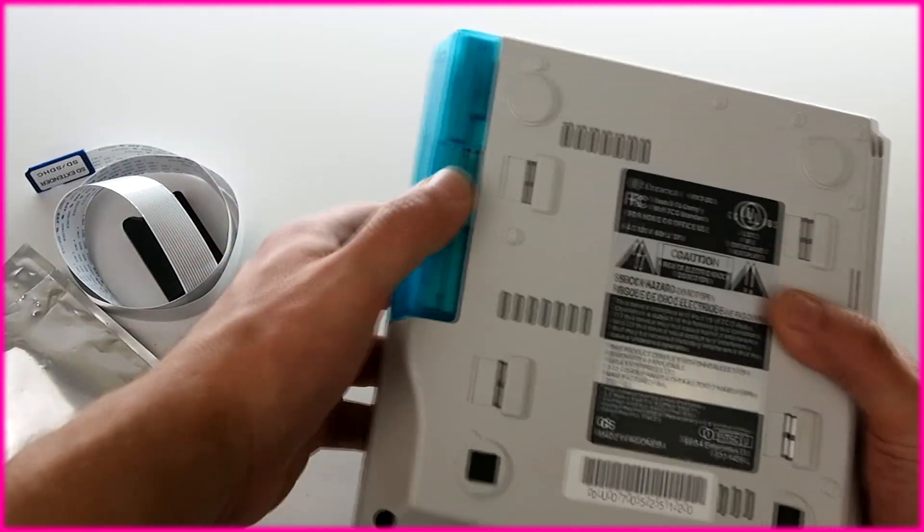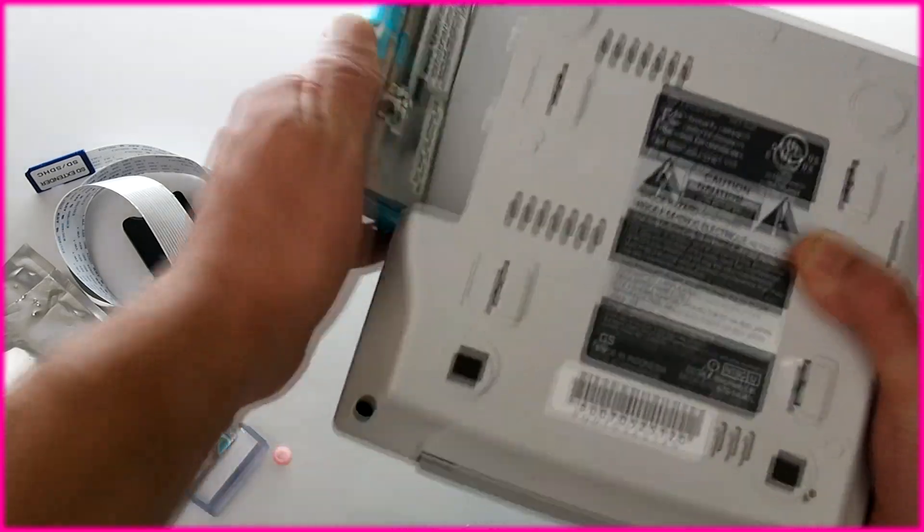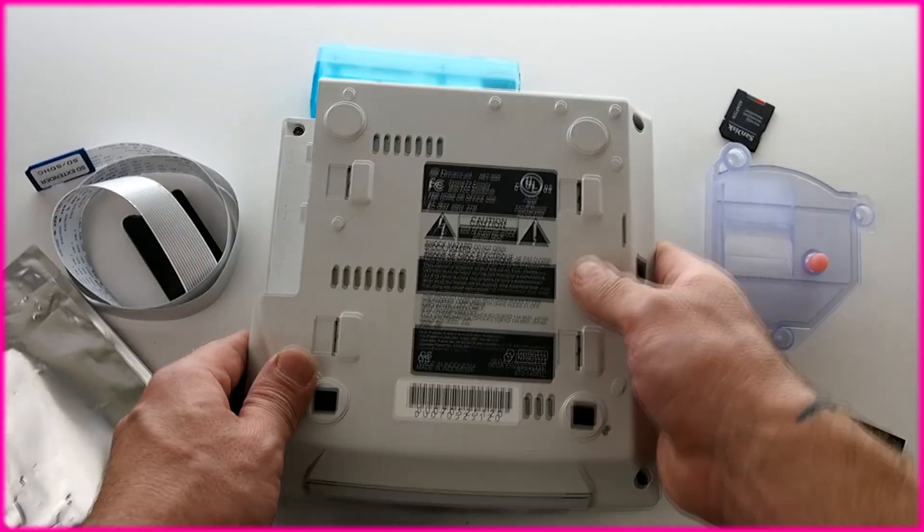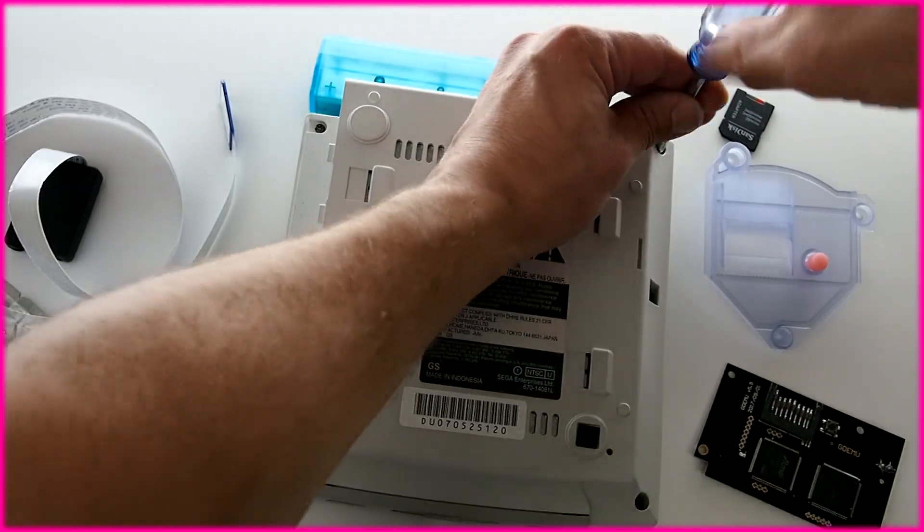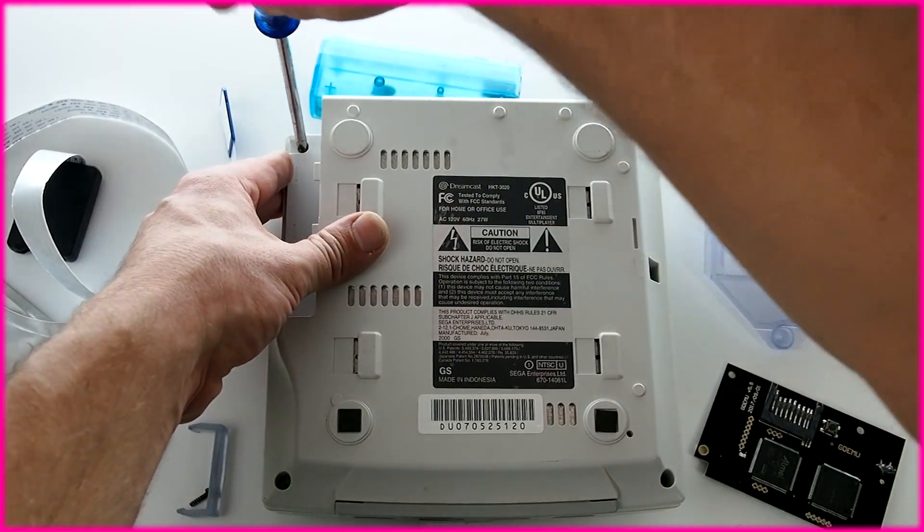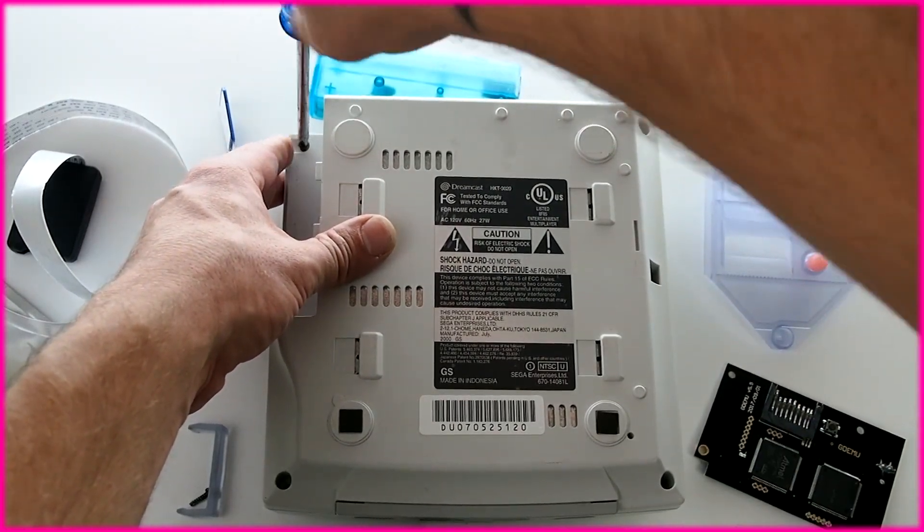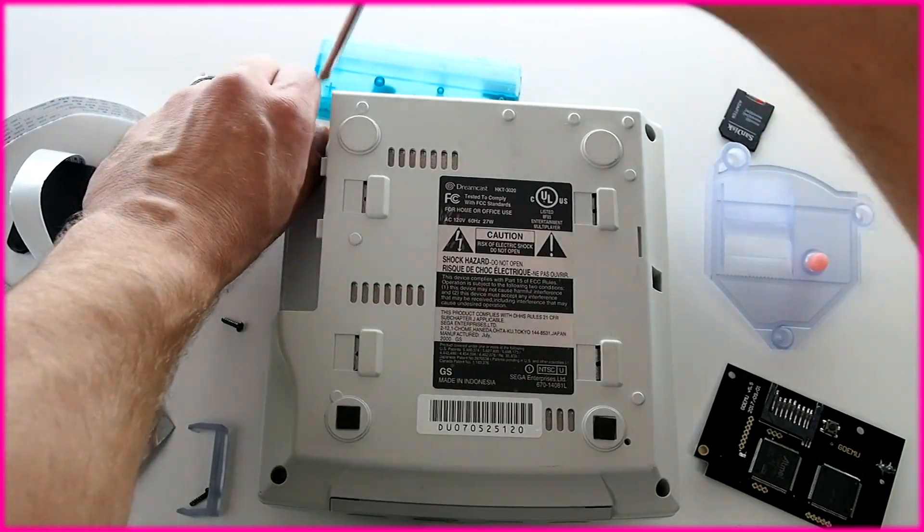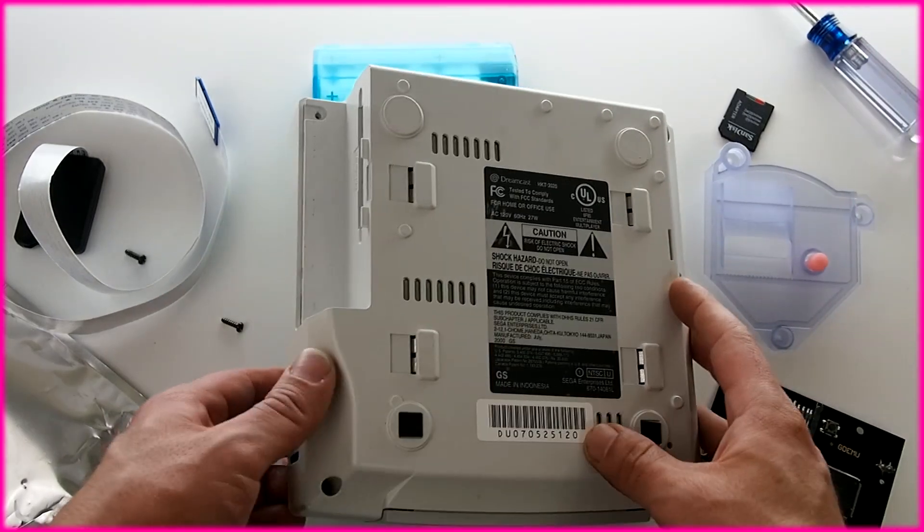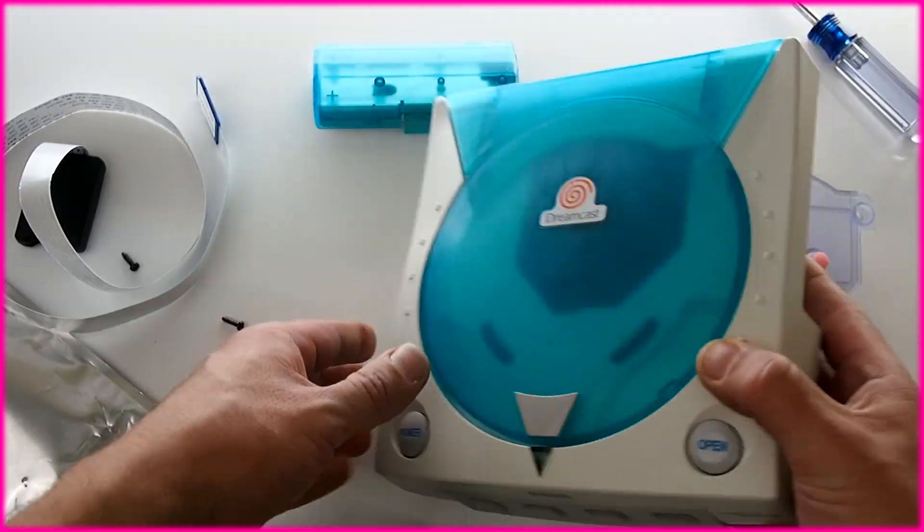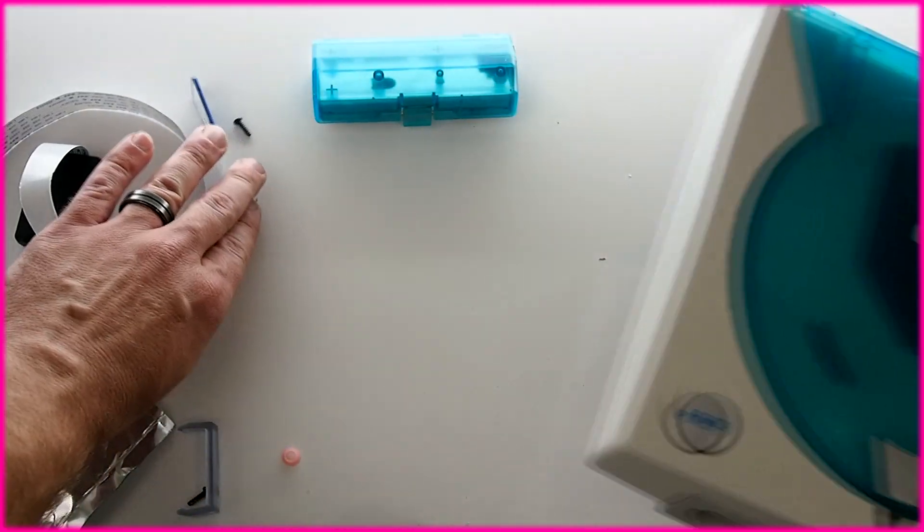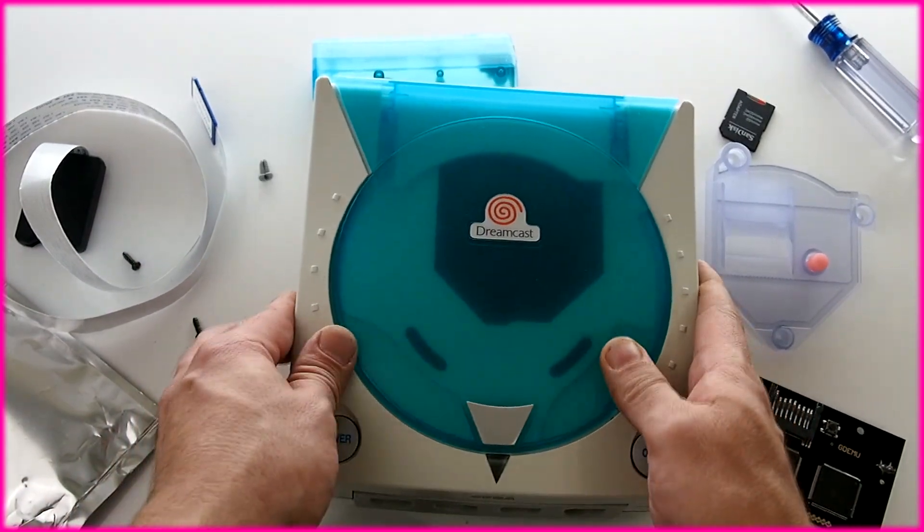Alright so you just flip over your Dreamcast, take out the LAN adapter, and then there's a series of four screws. That's it, just four. Taking out the screws. Now that that's done, give the system a little shake when you flip it over to get the rest of the screws out. It's weird they can just catch in there and keep you from opening it even though the screws are actually unscrewed.